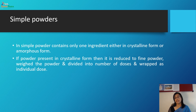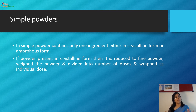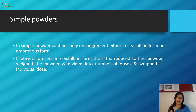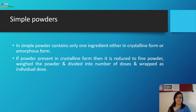Simple powder contains only one ingredient, either in crystalline form or in amorphous form. The difference: amorphous form has a coarse fine particle size, while crystalline form has a defined crystalline structure. If powder is present in crystalline form, it is to be reduced to a finer powder, then weighed, divided into a number of doses, and wrapped as individual doses.